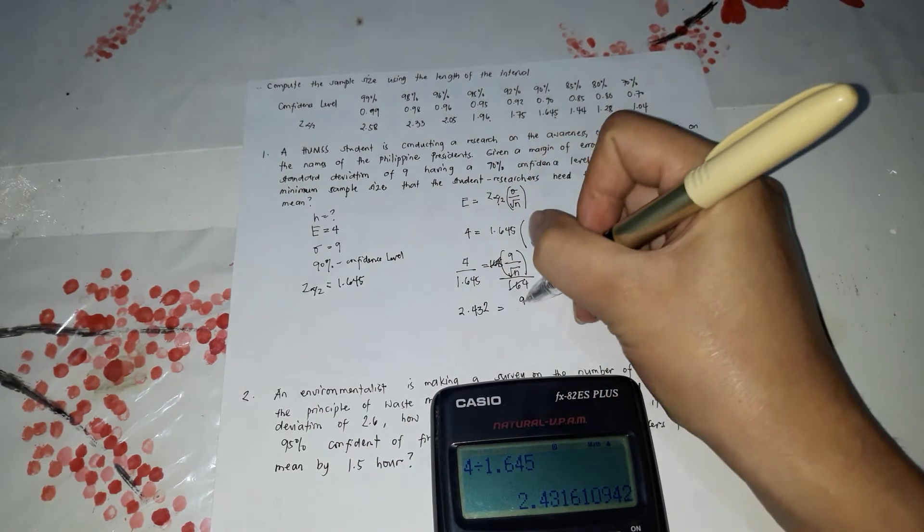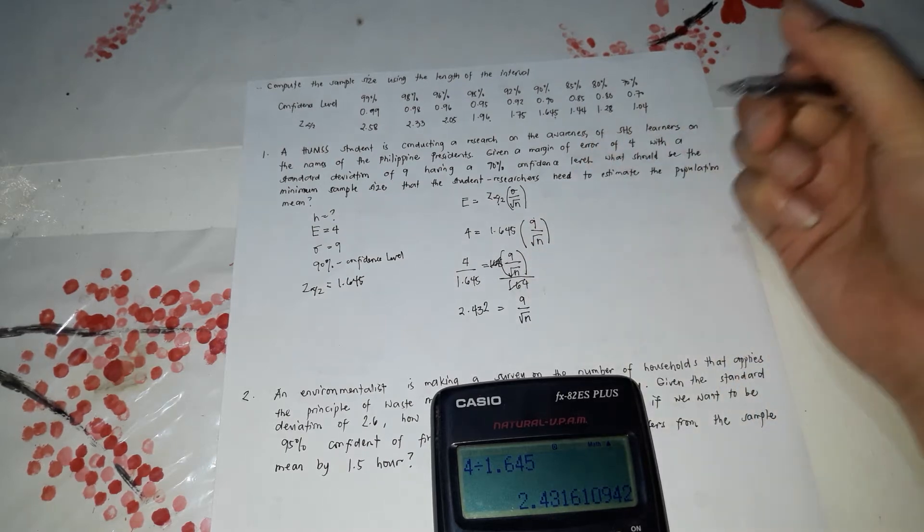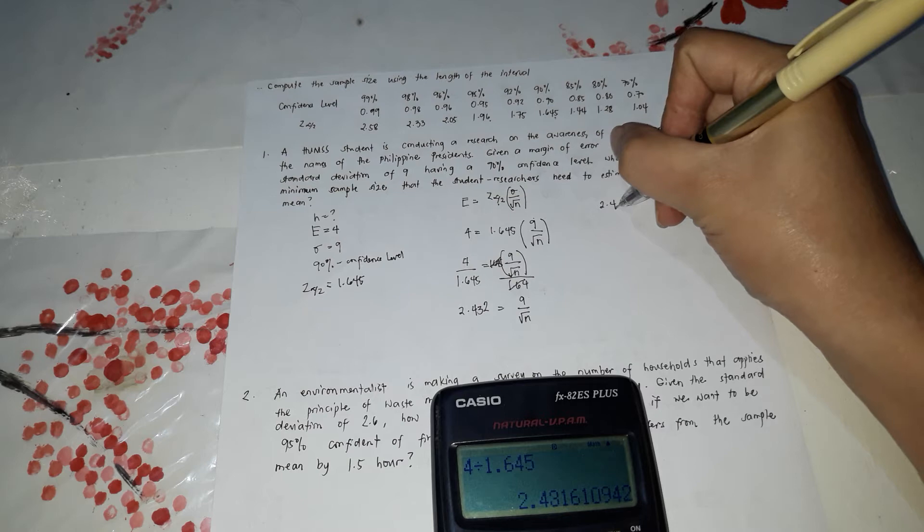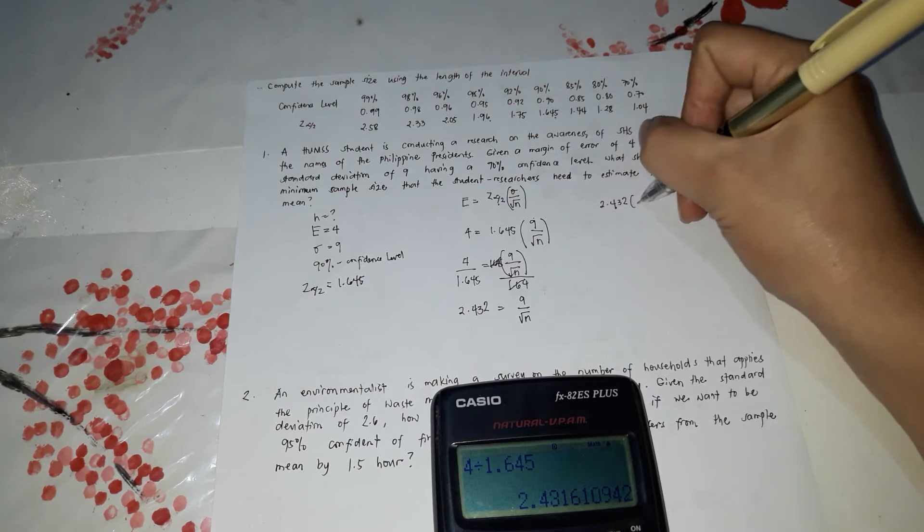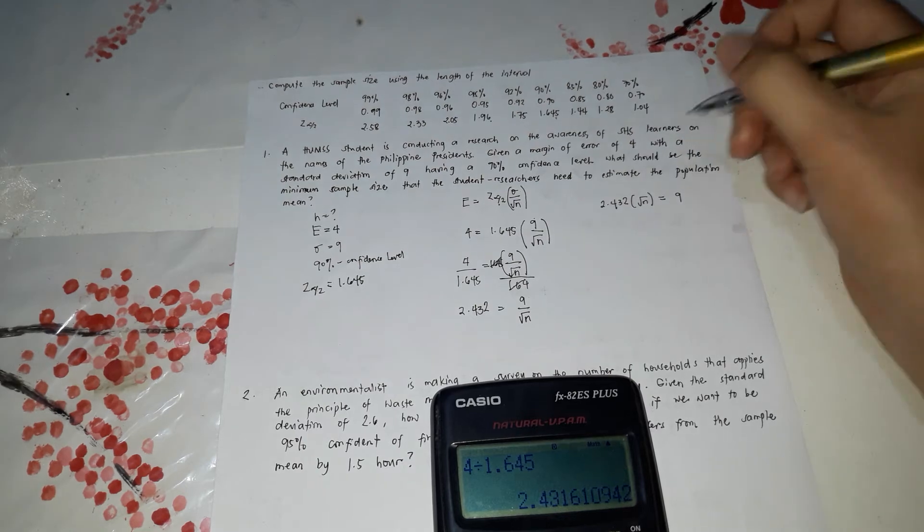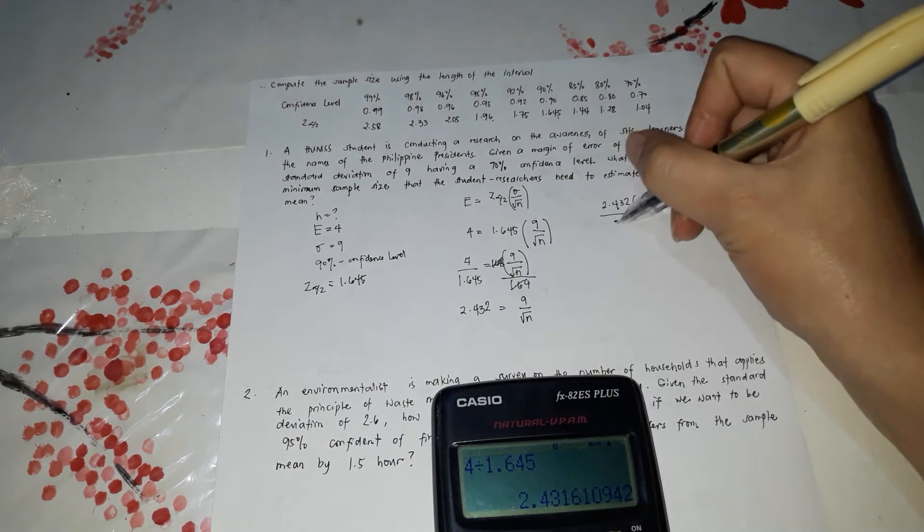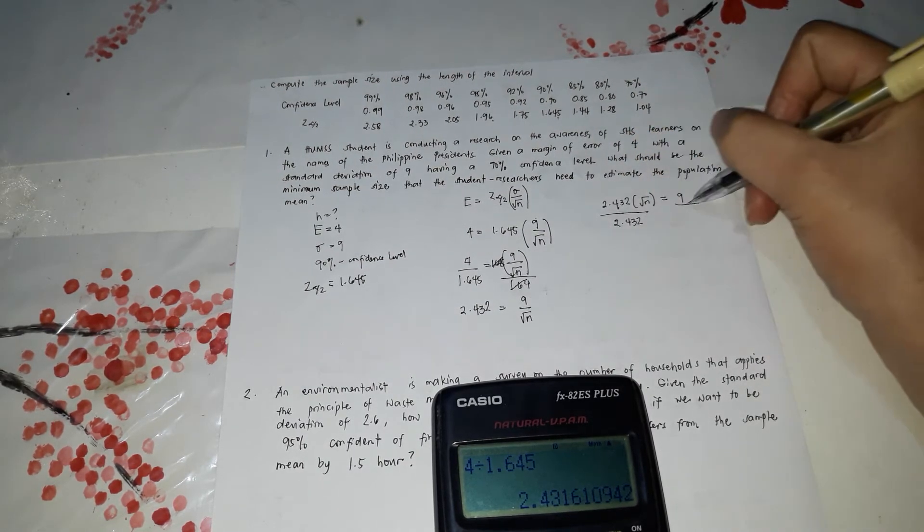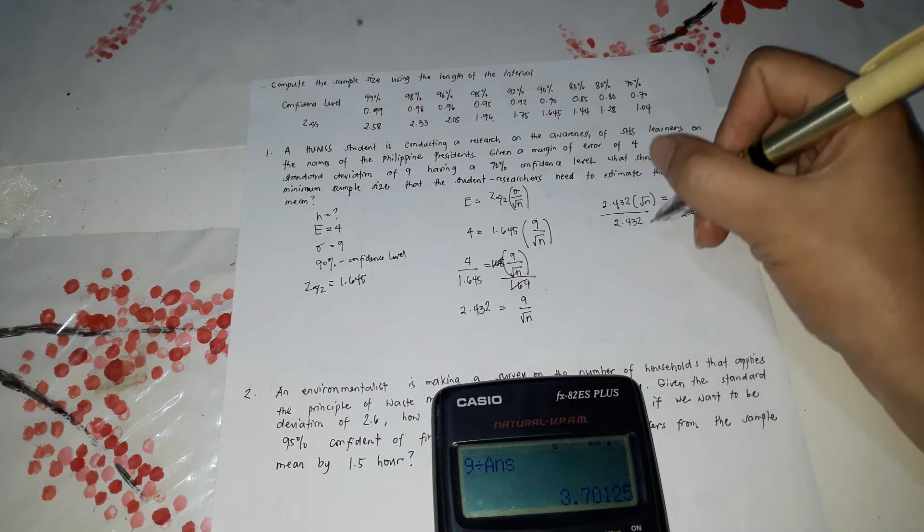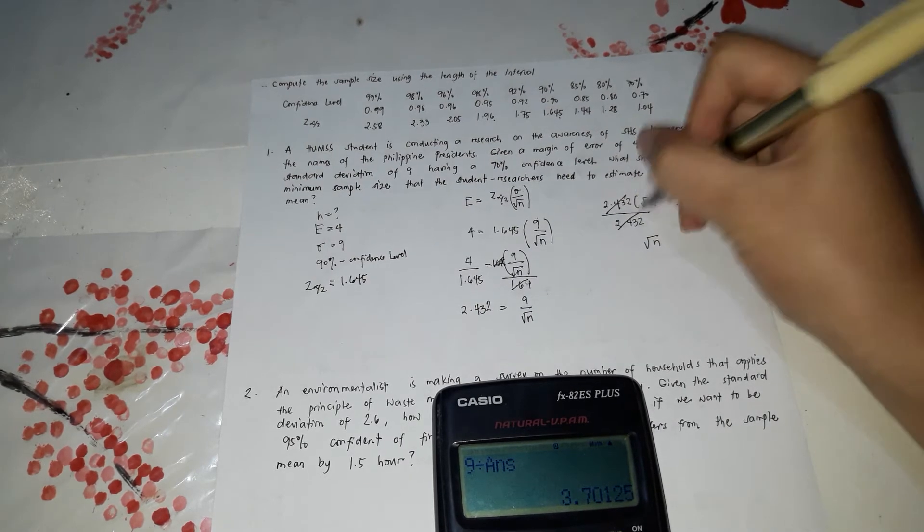Which is equal to 9 square root of N. So cross multiply. So 2.432 times square root of N is equal to 9. Now divide both sides by 2.432. So 9 divided by 2.432, it's square root of N. So cancel this out.